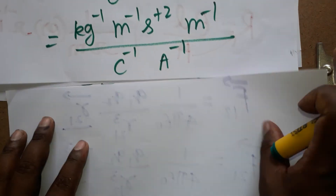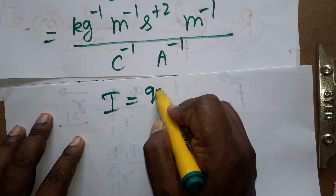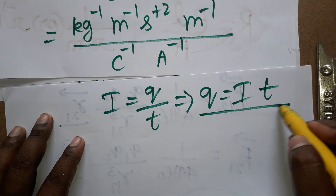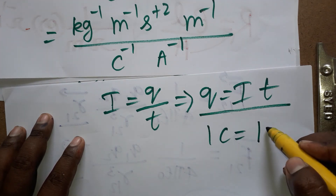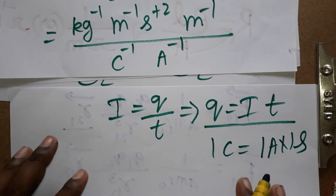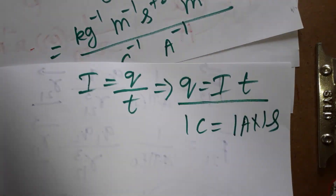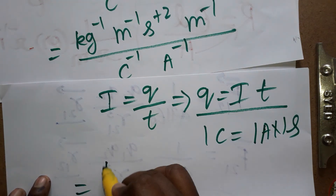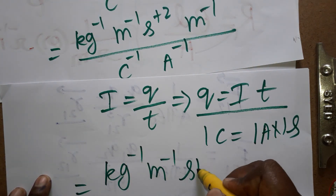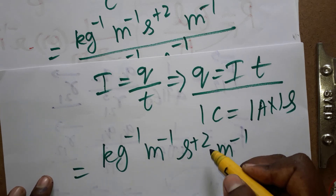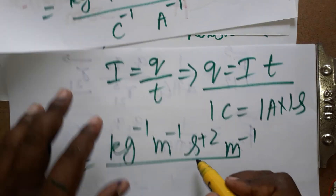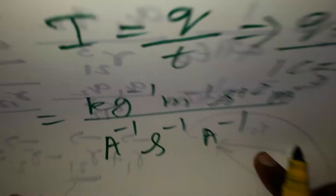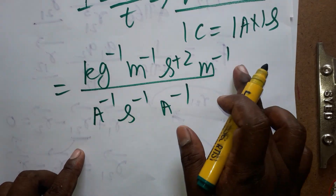Current equals charge by time, so charge equals current times time. Therefore one coulomb equals one ampere times one second. So coulombs can be replaced by ampere times second. From the denominator, we get kg inverse, meter inverse, second plus two, meter minus one, divided by ampere inverse second inverse times ampere inverse.